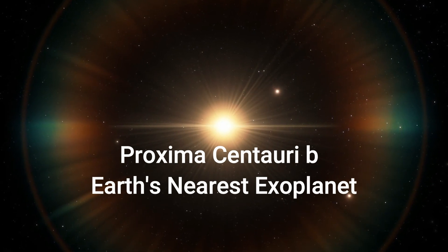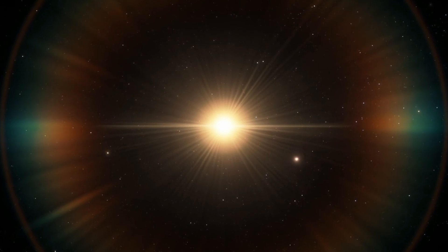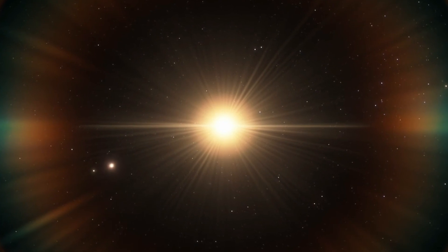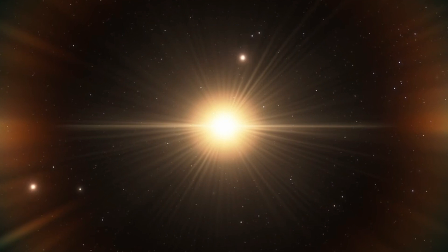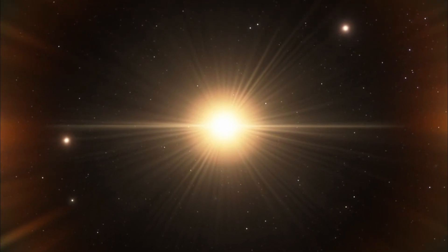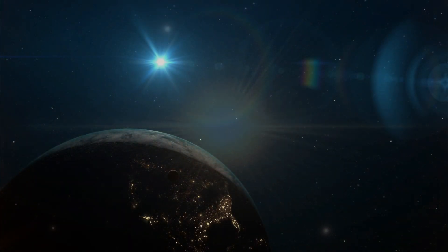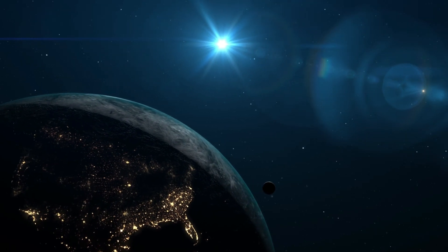Proxima Centauri b orbits Proxima Centauri, the closest star to our Sun, located a mere 4.24 light-years away in the Alpha Centauri star system. Discovered in 2016, Proxima b is approximately 1.17 times the mass of Earth and resides within its star's habitable zone, where temperatures could support liquid water. While Proxima b's proximity makes it an enticing target for study,